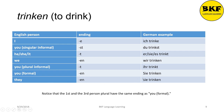Now, for 'they,' sie is written with a lowercase s. And for formal 'you,' it is written with a capital S. So that is the only difference between these two. Notice that the first and third person plural would have the same ending as formal 'you.'